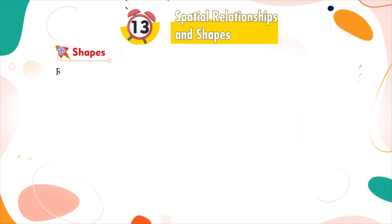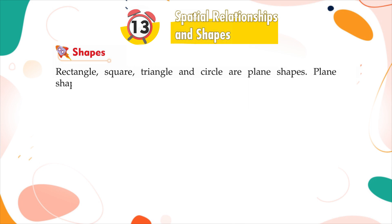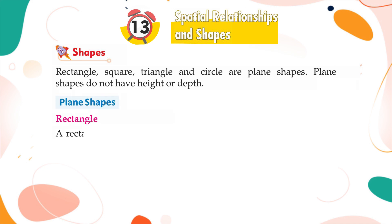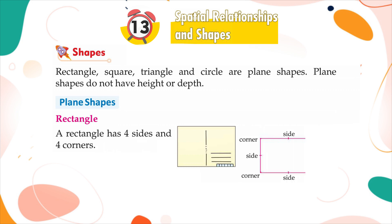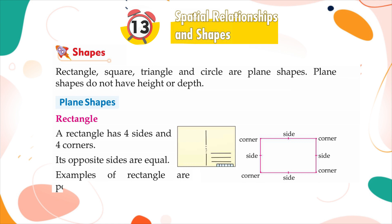Shapes: Rectangle, square, triangle, and circle are plane shapes. Plane shapes do not have height or depth. Rectangle: A rectangle has four sides and four corners. Its opposite sides are equal. Examples of rectangle are postcard, blackboard, scale, etc.